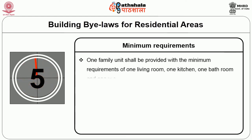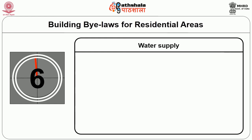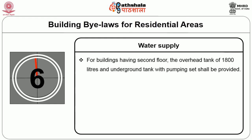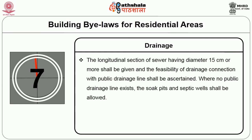Minimum requirements: one family unit shall be provided with the minimum of one living room, one kitchen, one bathroom, and one water closet. Water supply: for buildings having a second floor, an overhead tank of 1800 liters and an underground tank with pumping sets shall be provided. Drainage: the longitudinal section of sewer having diameter 15 cm or more shall be given and the feasibility of drainage connections with public drainage lines shall be ascertained. Where no public drainage lines exist, a soak pit or septic wells shall be allowed.